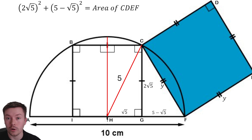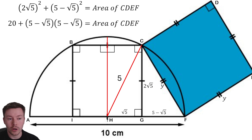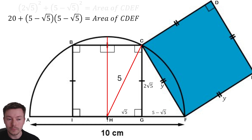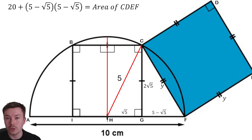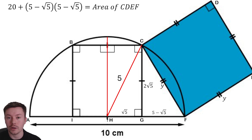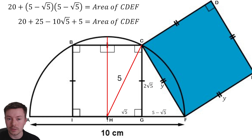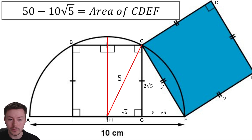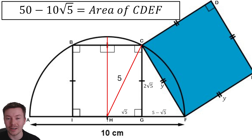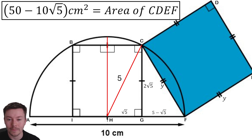(2√5)² = 20. Then for (5 − √5)², expanding the brackets: 5 × 5 = 25, minus √5 × 5 = minus 5√5 — we have two of those, so minus 10√5 in total — and then minus √5 × minus √5 gives plus 5. Collecting all like terms together, we get a final answer of 50 − 10√5 centimeters squared.